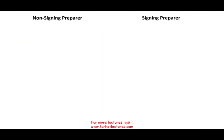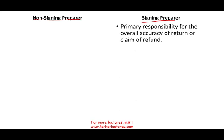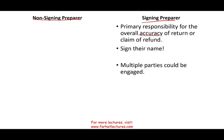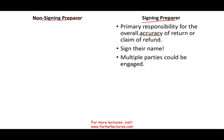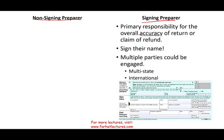We're going to separate tax preparers into signing and non-signing preparers. The signing preparer is the primary person responsible for the overall accuracy of the return or claim of refund — simply put, they signed their name on the return. Because they signed, they are responsible. For large returns, high net-worth clients, or businesses in several states, you might have multiple parties engaged, but the person who signs the return is the primary person responsible.